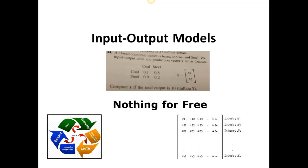Hi, Dr. Pat here. We're looking at input-output models, and the key thing to remember is there's nothing for free. Whenever we produce something, we're always using some kind of resources — whether it's fertilizer, water, metals, plastics that use oil, energy, electricity — all that. Whenever we produce something, we're always using something to produce it, so nothing we ever get for free.